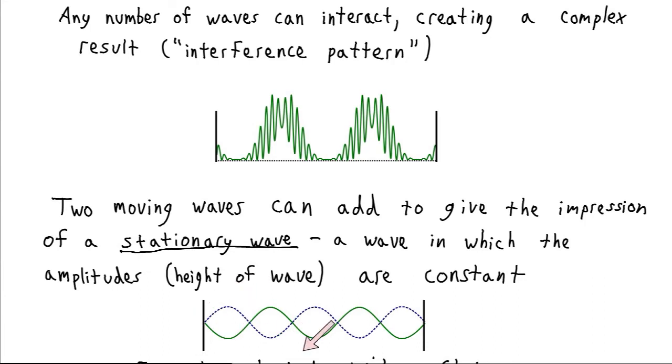Where you see these high peaks and you see these nodes where the string doesn't seem to be moving very much. And what's happening is that there is a forward wave going through that string, and there's also a reverse wave going back the other direction when the wave bounces off the end of the tether.